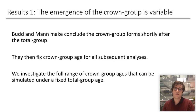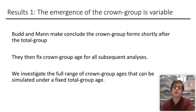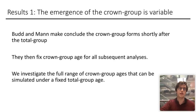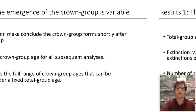First we look at how the crown group emerges. The previous paper concludes using an analysis that the crown group forms quickly after the total group, and they then fix the crown group age for all subsequent analyses. Here we investigate the full range of crown group ages that can be simulated in a birth-death model.